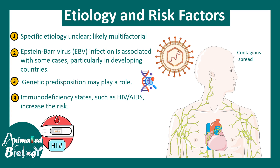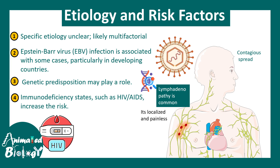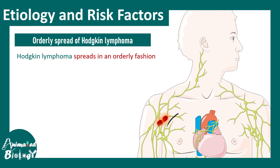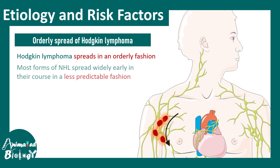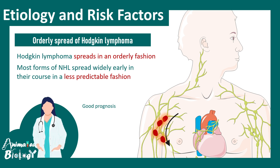The spread of this lymphoma is contiguous — one lymph node gets affected and then it spreads from one to another. Lymphadenopathy is a common pathological symptom underlying this lymphoma, and it is localized and painless. Hodgkin's lymphoma spreads in an orderly fashion, making it predictable, with a clear order of spread. This is very different from non-Hodgkin's lymphoma, whose spreading pattern is less predictable.